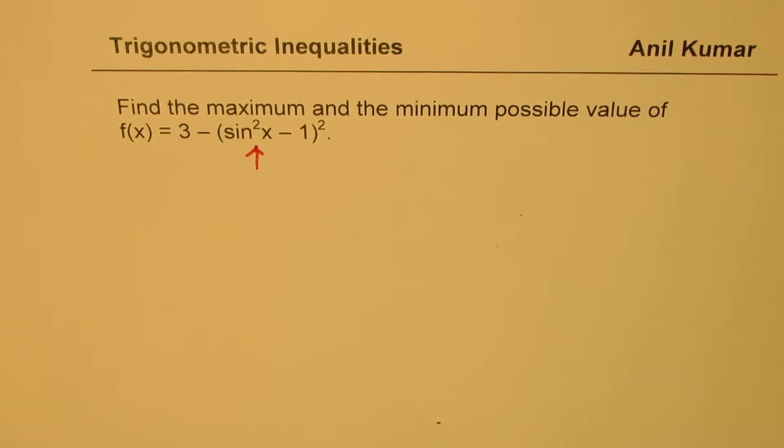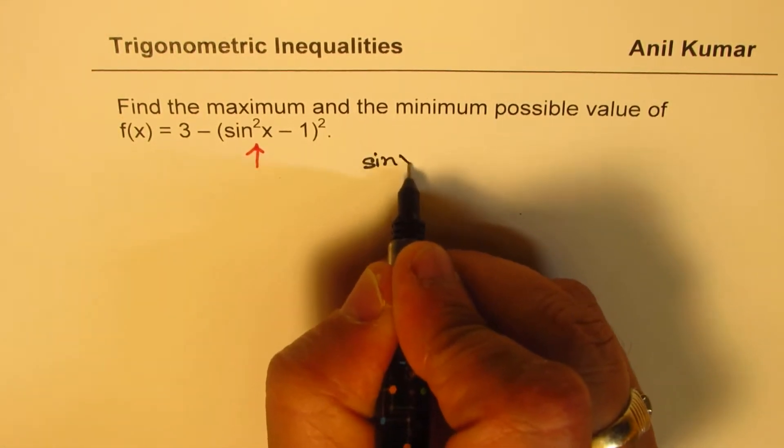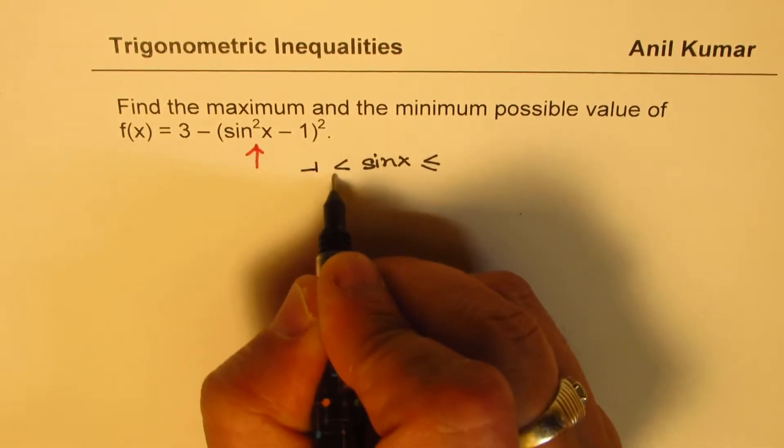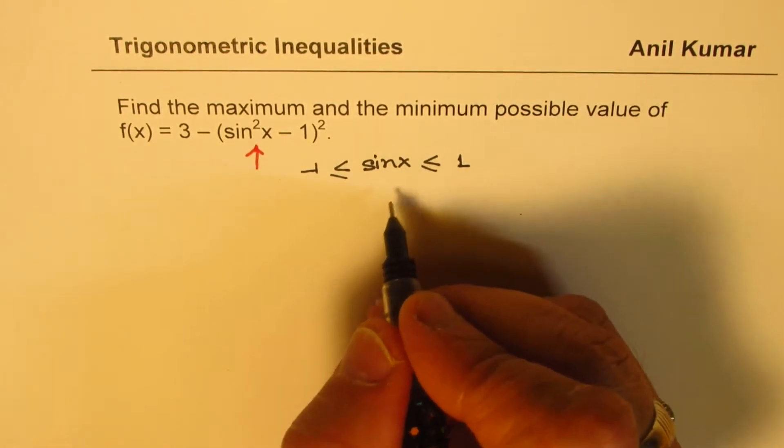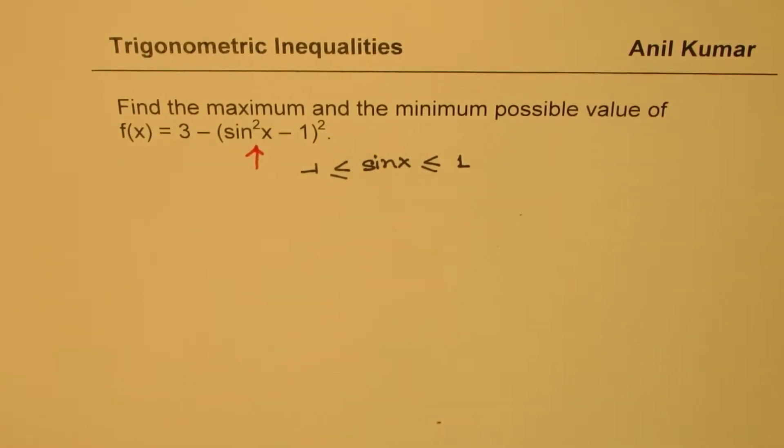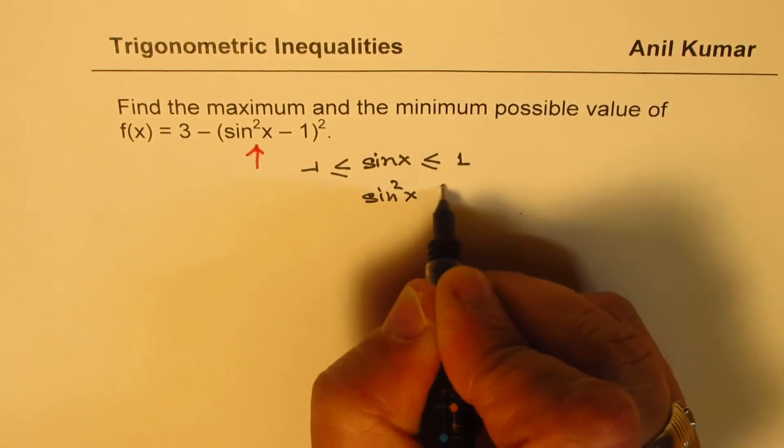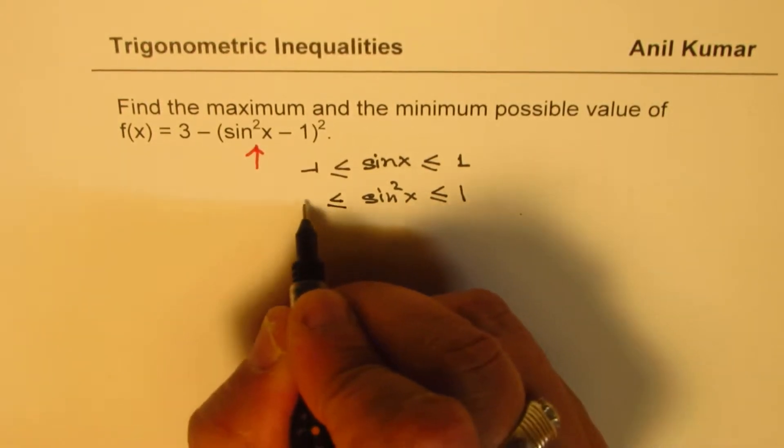Now we know sin x value, right? So sin x is between minus 1 and plus 1. Correct. If I square all these numbers, in that case what happens? So basically, you know, sin²x value will be less than 1 of course, but it is going to be positive, right? So it is going to be greater than 0.